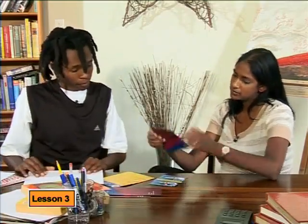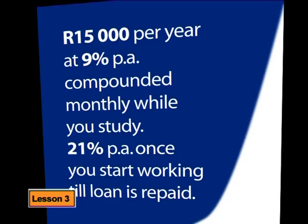Now let's use the information you were given from the bank. They are prepared to offer you a loan with an interest rate of 9% compound interest, calculated monthly, for the period you are studying. When you start working, the interest rate increases to 21% per annum, compounded monthly. When you are paying off a loan that works on compound interest, not all of the repayment goes towards reducing the initial loan. Some of the repayment goes towards paying the interest, calculated at 21% per annum. Are you saying when I make my first repayment, the loan will not only go down by 800 rand?